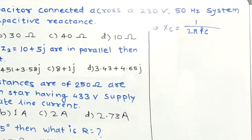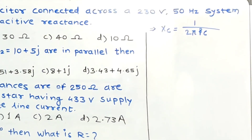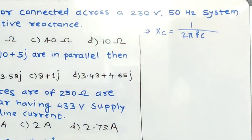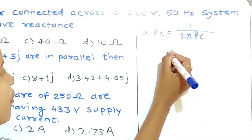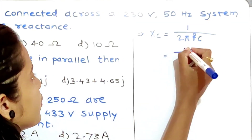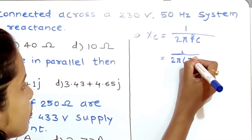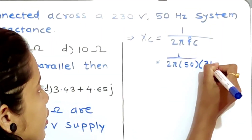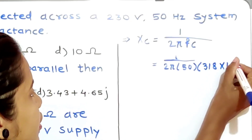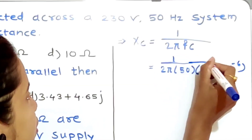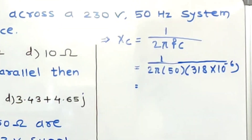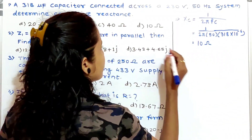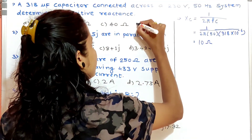In the problem, 318 microfarad is the capacitor, 230 volt supply, 50 hertz frequency — all quantities are given. Put all the values: XC = 1 / (2π × 50 × 318 × 10⁻⁶). The answer is 10 ohm. So the answer is option D.